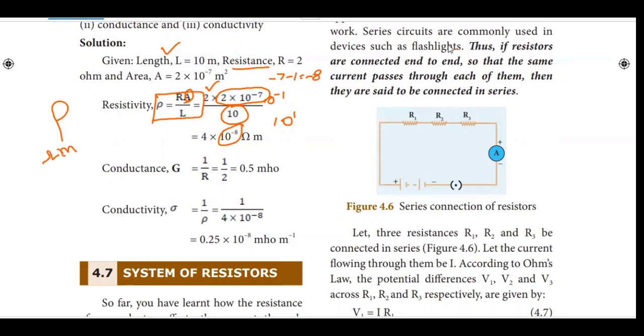Resistivity unit is ohm meter. Now conductance is reciprocal of the resistance. 1 by r. Resistance value r is equal to 2. So 0.5 ohm inverse or mho.